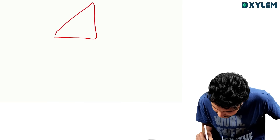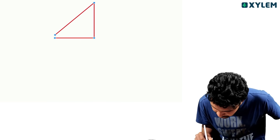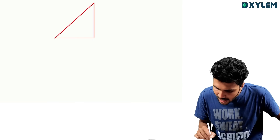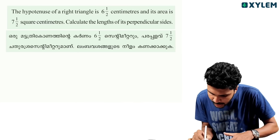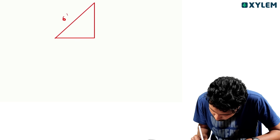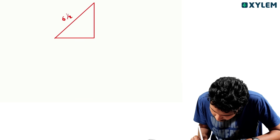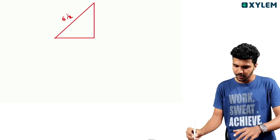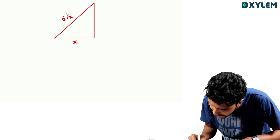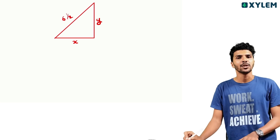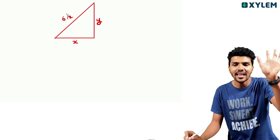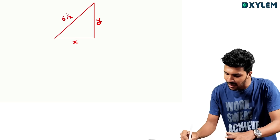It's a right-angled triangle with hypotenuse 6 and 1 by 2. The base is x and the altitude is y.